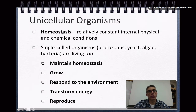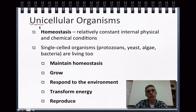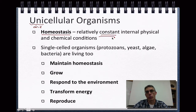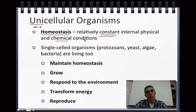Looking at this first slide, we're going to be talking specifically about unicellular organisms. The prefix uni basically means one, so we're going to be looking at one-cell creatures. The term we're going to focus on is homeostasis. The definition for homeostasis is a relatively constant — and that's an important word — internal physical and chemical condition. One-cell creatures are made up of lots of different cell parts called organelles, and those organelles must have a relatively constant set of internal physical and chemical conditions to function properly.